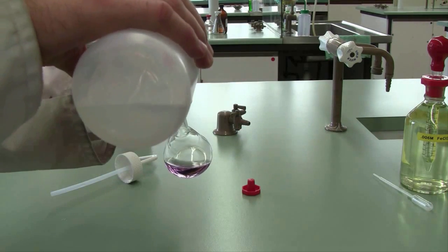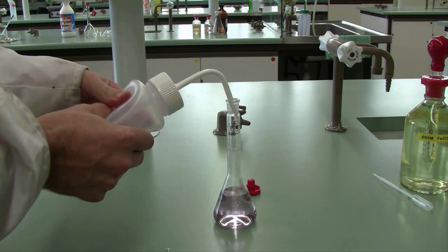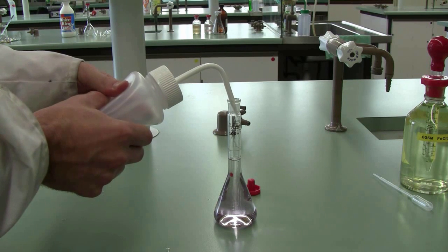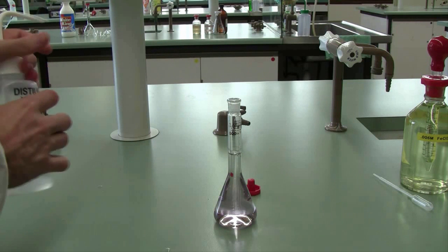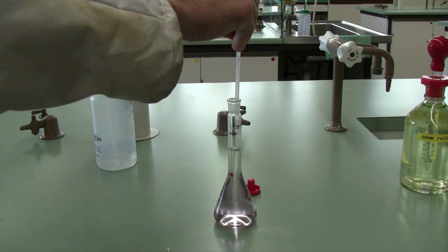Progressively add distilled water and mix as you go. Use your wash bottle when you get close to the top and use a dropper to add those last few drops to make sure the bottom of the meniscus is on top of the line. Then mix each flask by inversion, at least 40 inversions per flask.